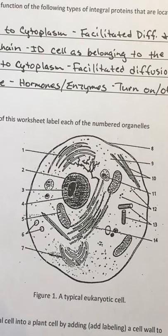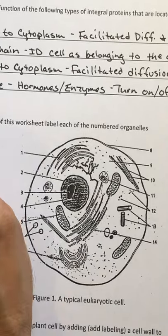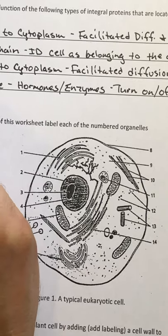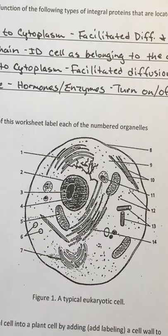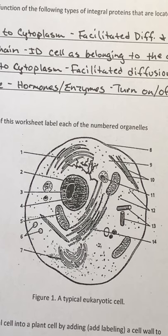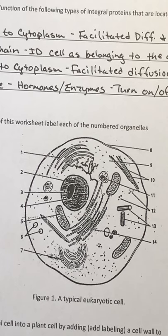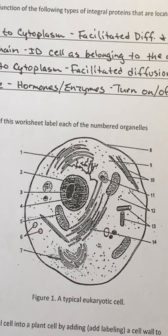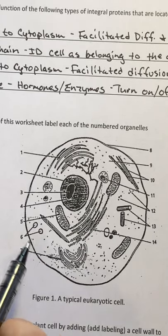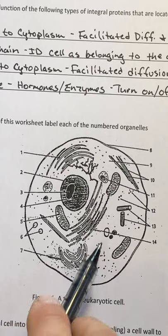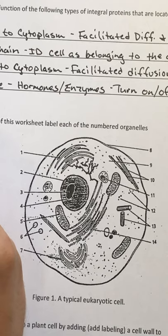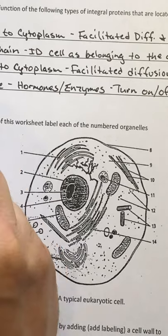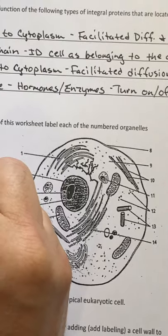Number five is the mighty mitochondria. We know that's one of those energy organelles, and we learned about it a little bit when we talked about the origins of eukaryotic cells through the endosymbiosis theory, and some on cellular respiration. Number six — these you'll just see randomly throughout the cytoplasm. We're going to call them storage organelles for now and go into a little bit more detail about those when we get to that section.